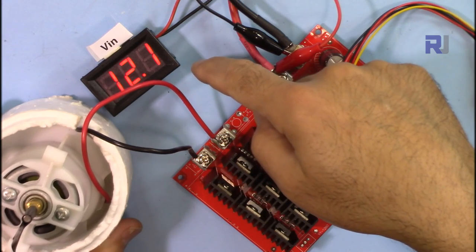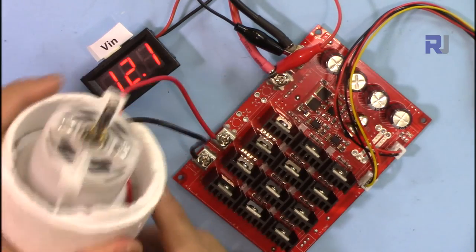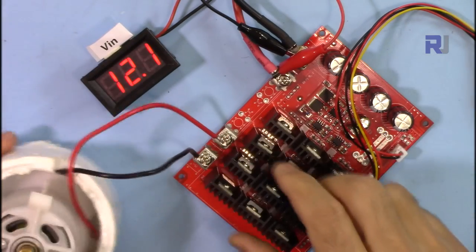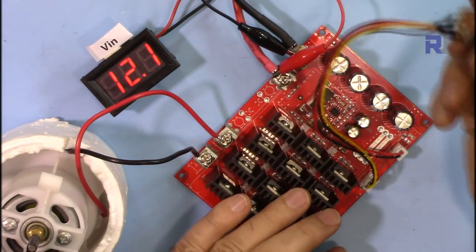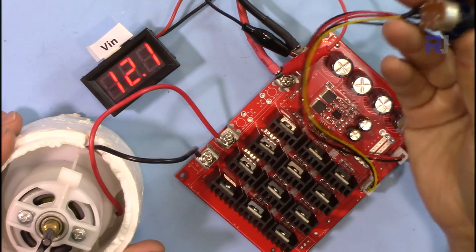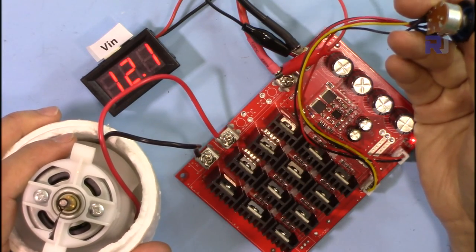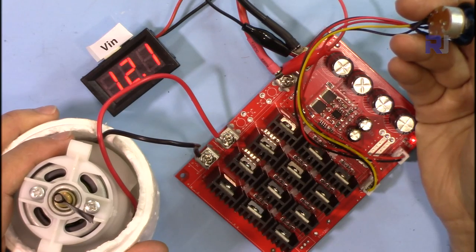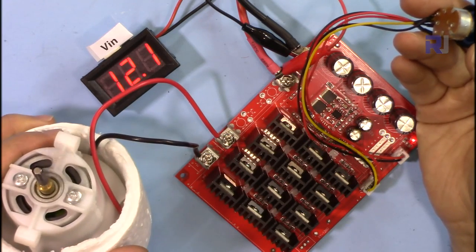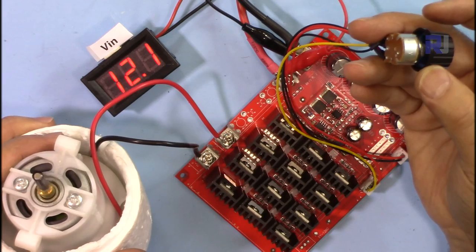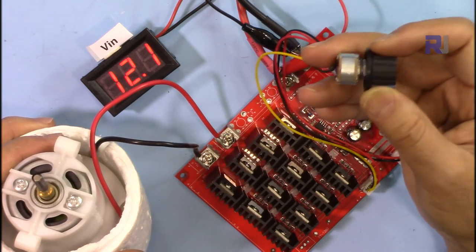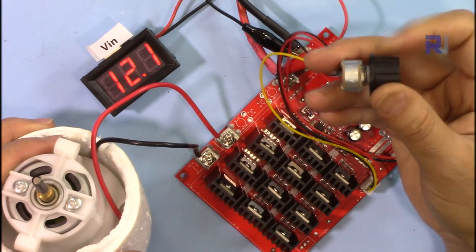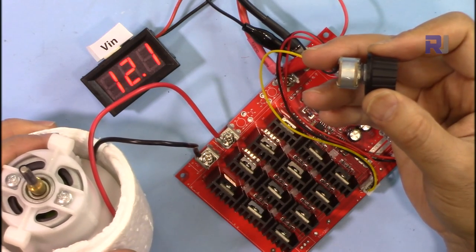Now the input voltage is 12.1 volts and I've connected the DC motor. Let me turn it on. Now it's at very minimum.